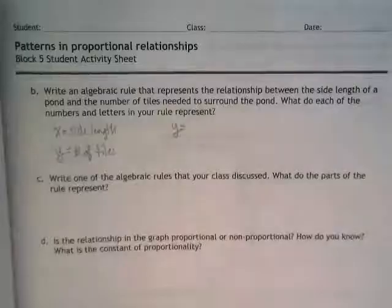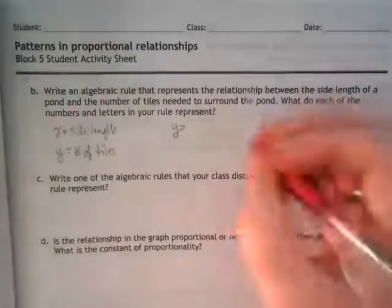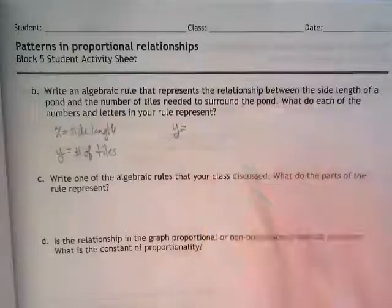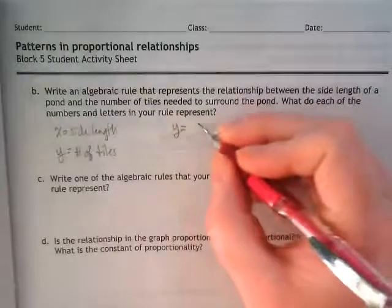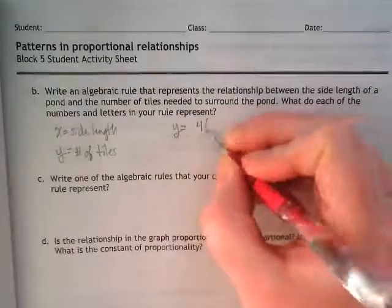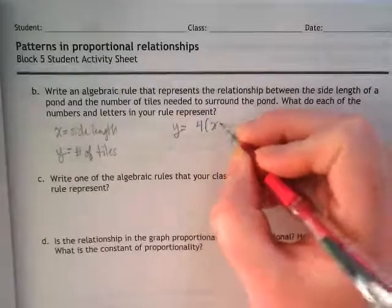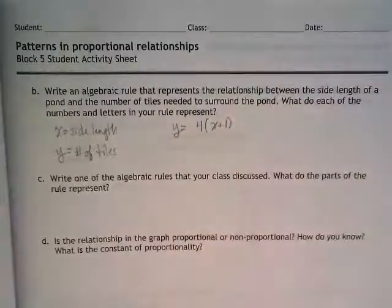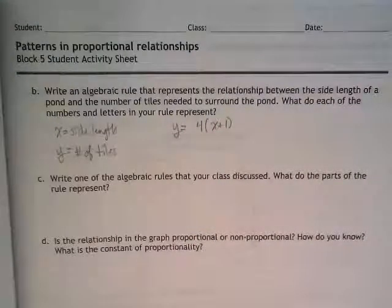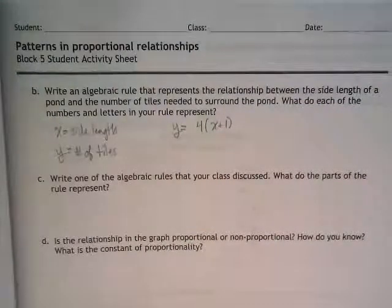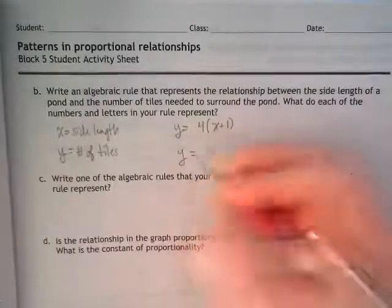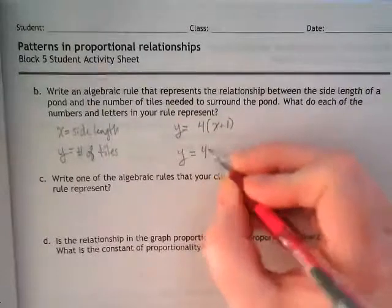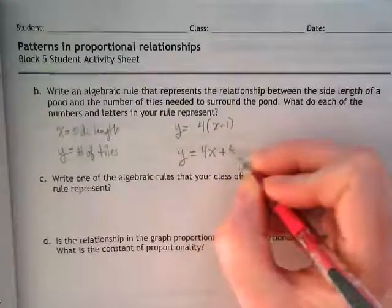We had two equations that came out of this class. One was basically you took the side length and you added one, right? So one of them was saying 4 times (X plus 1). That's what was coming up here. Yours was different.